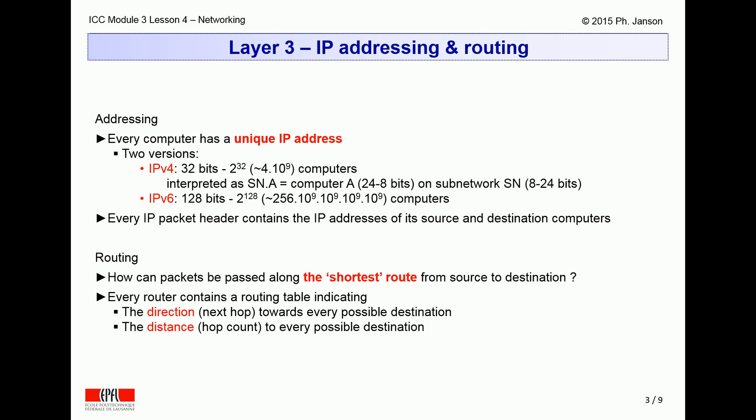Today, 4 billion computers is clearly insufficient for the global Internet, which interconnects many more than that. Although many computers still bear IPv4 addresses, IPv6 is being deployed in parallel. It offers 128-bit addresses, which allows distinguishing between 2 to the power of 128 distinct computers — that is, 256 billions of billions of billions of billions of billions of computers, which is clearly plenty enough since that is more molecules than exist in the entire universe.